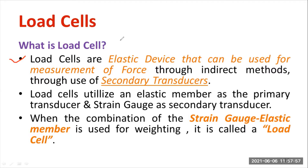First, the force will be converted into strain or displacement. Thereafter, the displacement or strain will be converted to electrical resistance. So in a load cell, we are incorporating a strain gauge. We require one strain gauge along with the load cell. We can say that a load cell is a secondary transducer. Why do we consider the load cell as a secondary transducer? Because two energy conversions take place.